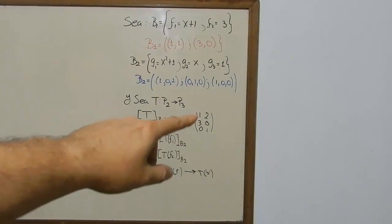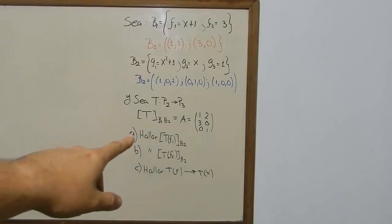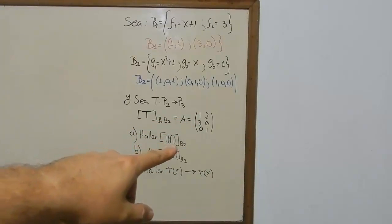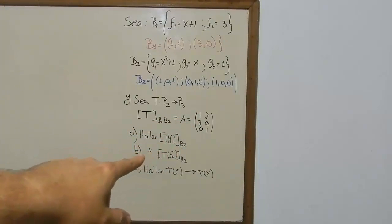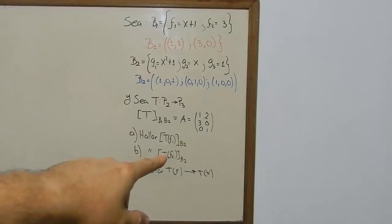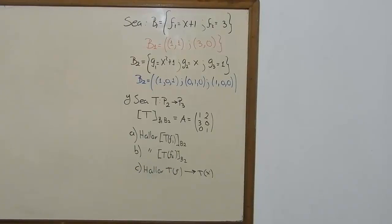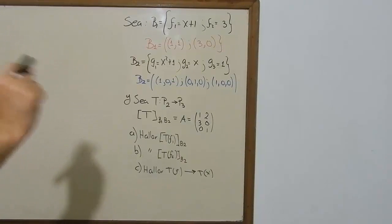We already have this transformation matrix, which is going to help us find the linear transformation of f1 on Base 2. We need to find the linear transformation of f2 on Base 2, and finally we need to find the linear transformation of f in a canonical base — that is, the transformation of x on a canonical base.